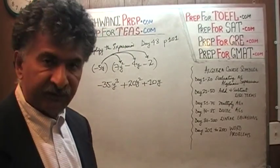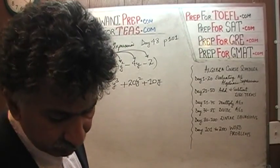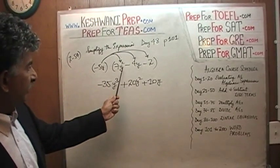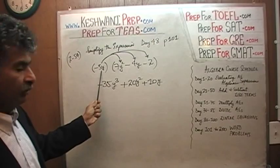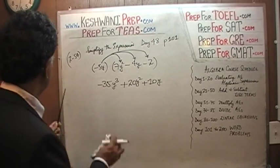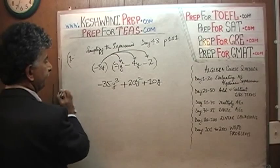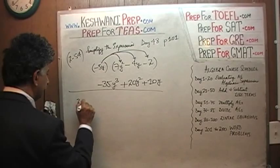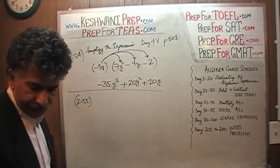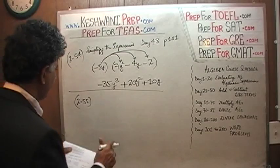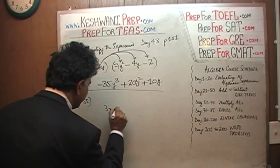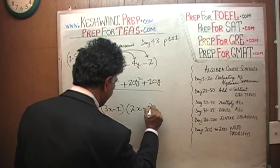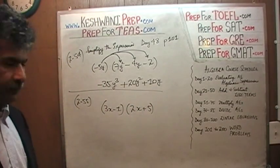The next one is the same idea except now they give you two expressions and each of them has two terms. Before we had three terms and one term; now we are going to do two and two. Problem 2.55: we have 3x minus 1, and 2x plus 5.